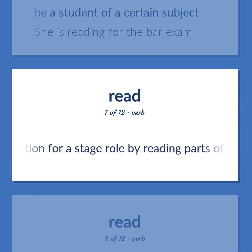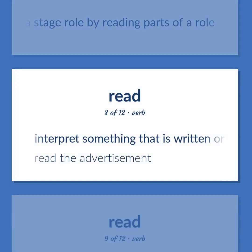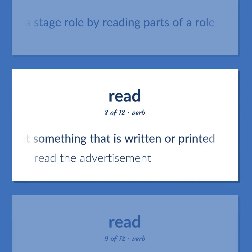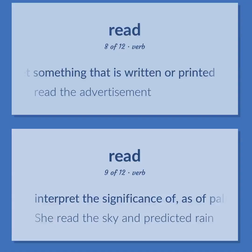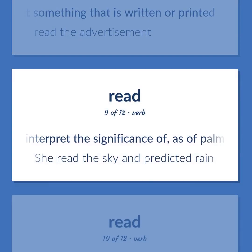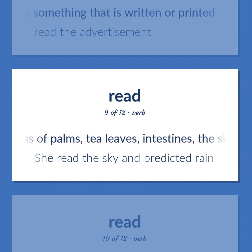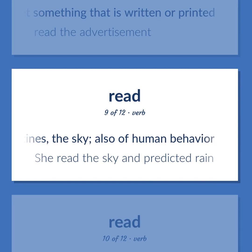Audition for a stage role by reading parts of a role. Interpret something that is written or printed — read the advertisement. Interpret the significance of: as of palms, tea leaves, intestines, the sky, also of human behavior — she read the sky and predicted rain.